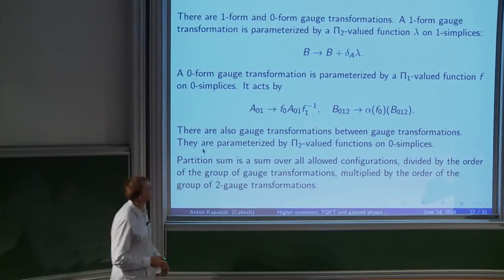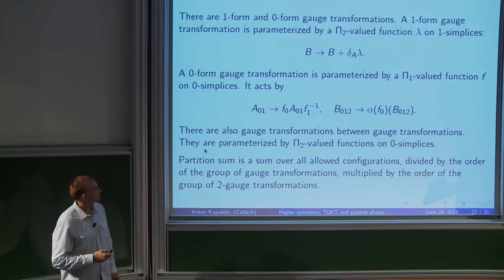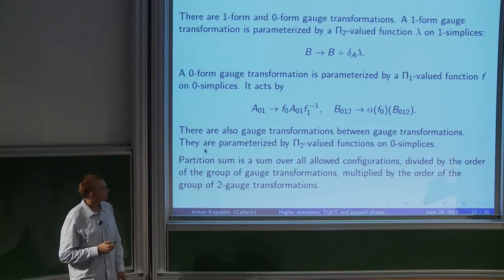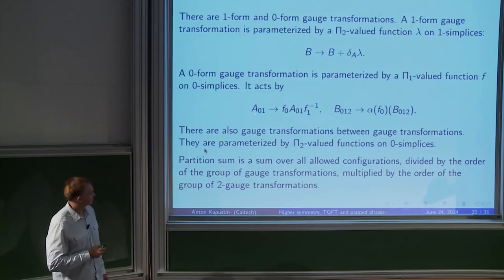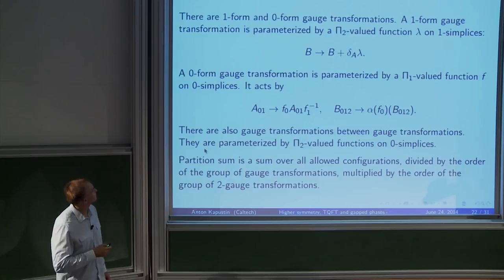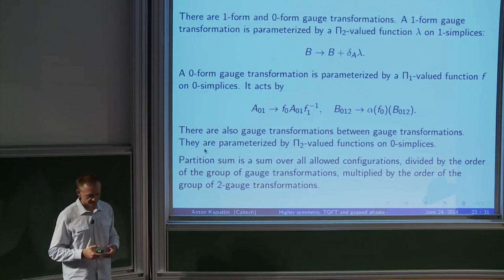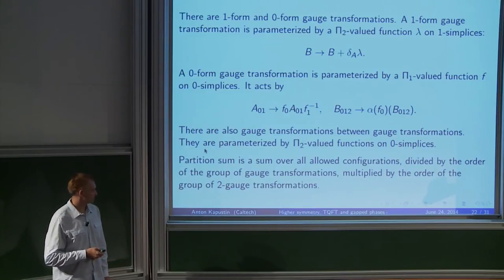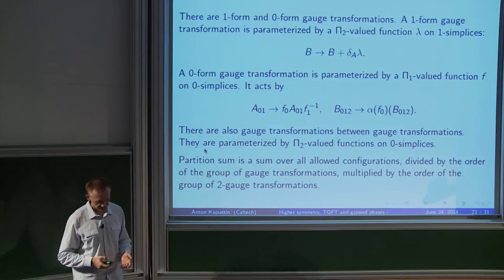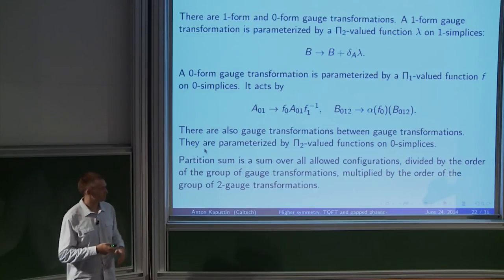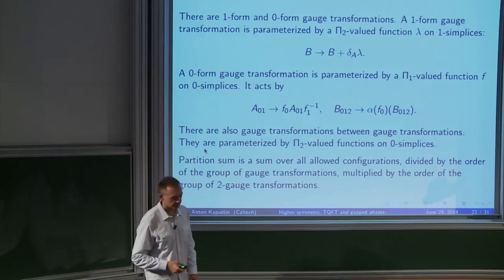We have a one-cochain with values in π₁ and a two-cochain with values in π₂, with constraints. The constraint on the one-cochain is just that it's a one-cocycle, exactly as in Dijkgraaf-Witten theory. The constraint on the two-cochain is trickier — for every three-simplex, it involves the π₁-valued variables on each one-simplex and π₂-valued variables on each two-simplex, and uses the twisted differential twisted by gauge field a. There are zero-form gauge symmetries parameterized by π₁-valued functions on zero-simplices, and one-form gauge symmetries parameterized by π₂-valued functions on one-simplices. Complicating matters, there are also gauge symmetries between gauge symmetries, parameterized by π₂-valued functions on zero-simplices.